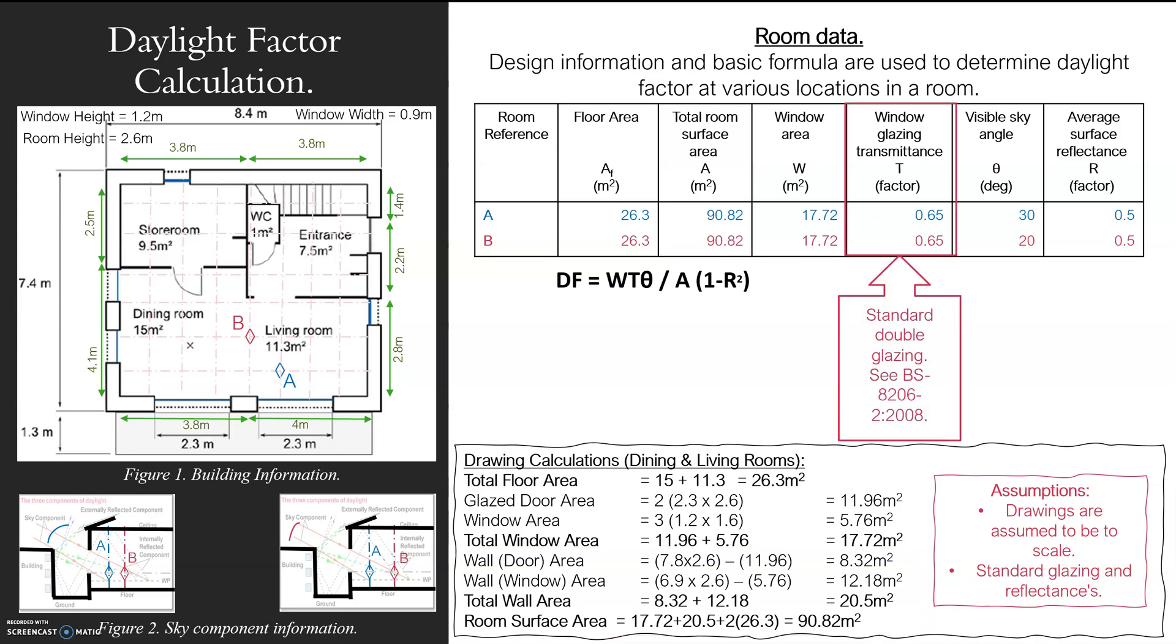What we then move on to is the glazing. The light coming through is affected by the transmittance - British standards or manufacturer details for that. Visible sky angle - I've done a little drawing here to show what happens. Depending on how close you are to the window, you see more of the sky than if you're further away.